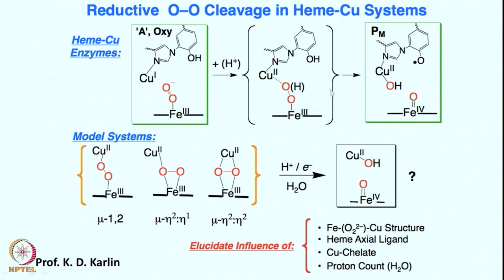Something needs to be done to these peroxo species if we are to show that iron(IV)-oxo + copper(II)-hydroxo species are forming. It is obviously happening in the enzyme, but we do not know how. This is the beauty of biomimetic studies — the bioinorganic fraternity thrives on such problems where almost nothing is known about the enzyme mechanism, it is a black box, and light is shed by the synthetic bioinorganic chemist. We will examine what role the axial ligand plays and whether it is necessary.